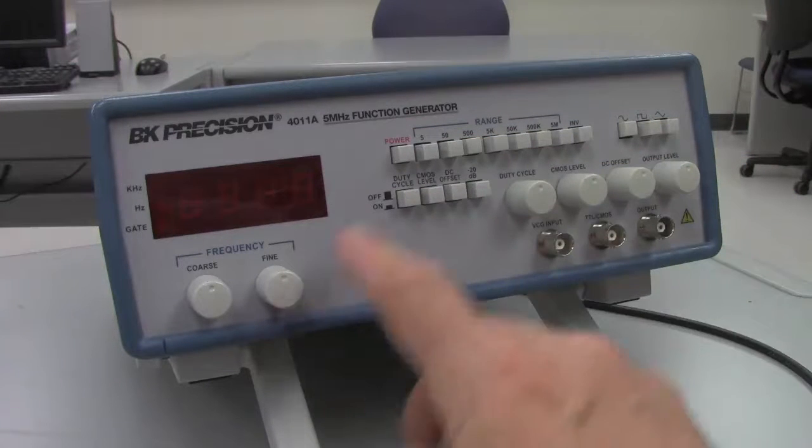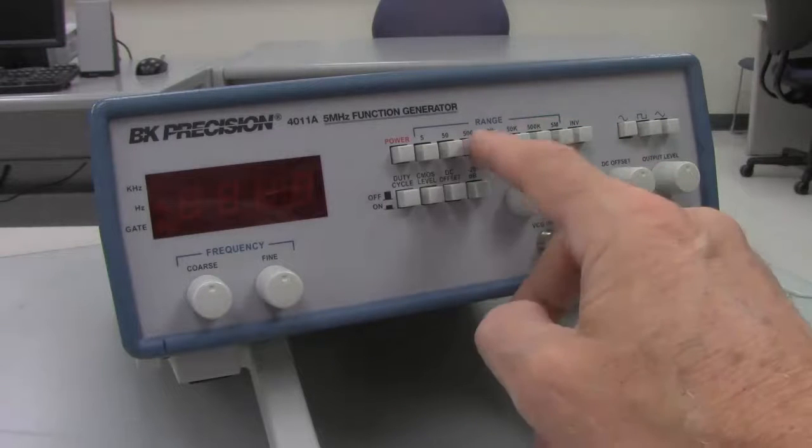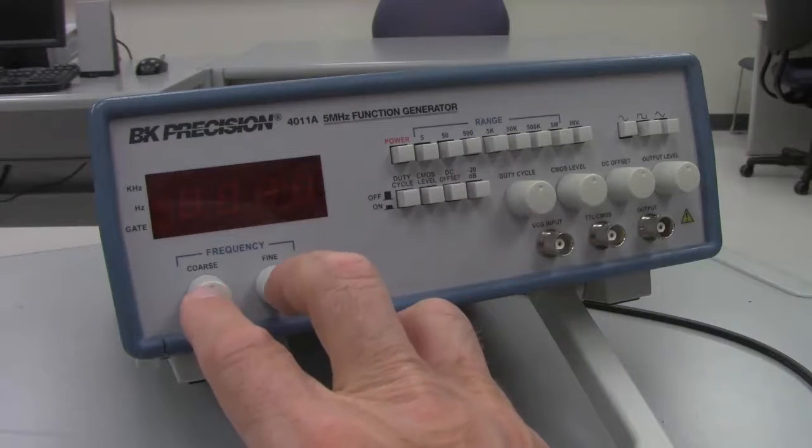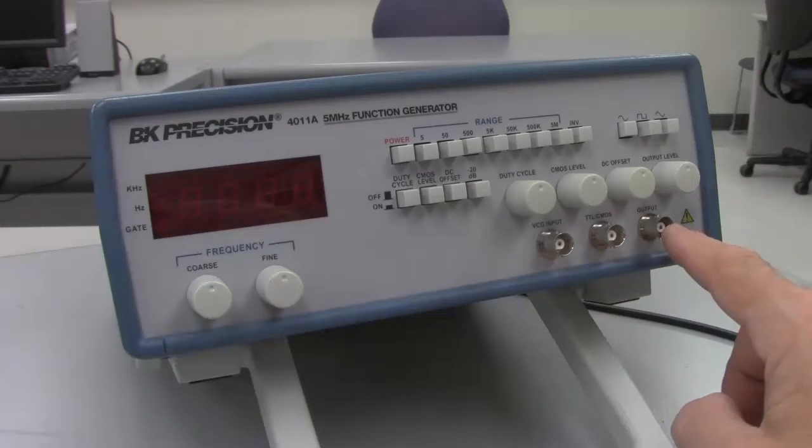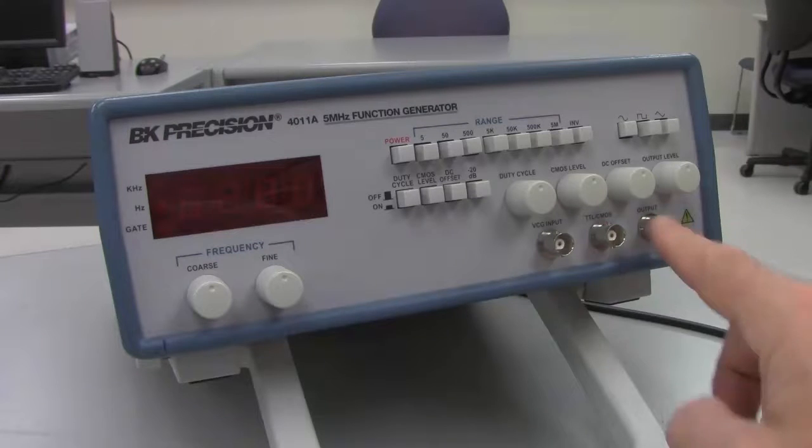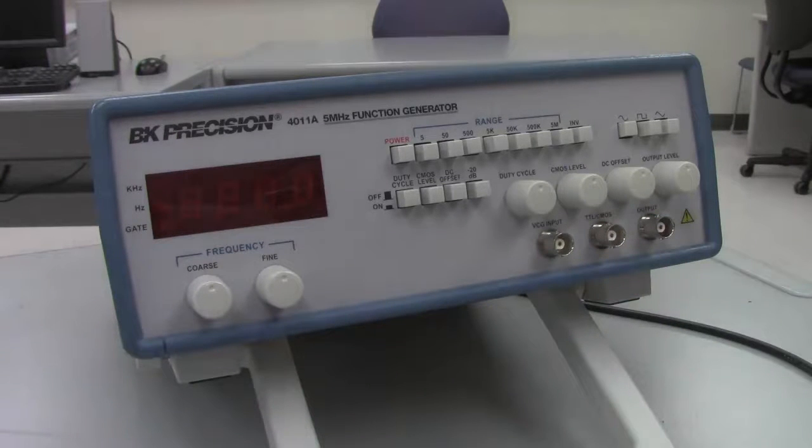We can adjust the frequencies, given the range of frequencies here, and then adjust it down to a fairly precise frequency. The output comes from here. We'll be using coaxial cables to run from the function generator over to our oscilloscope.